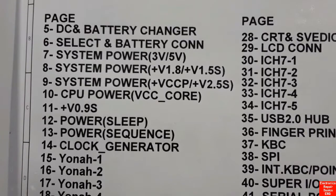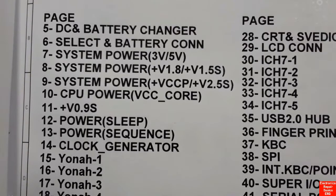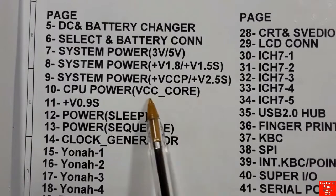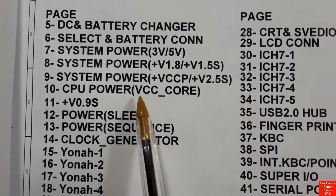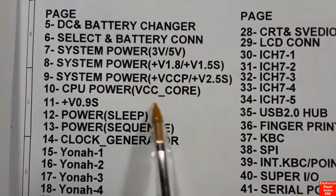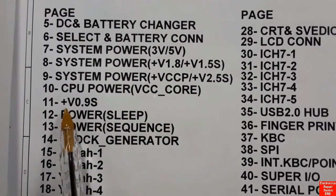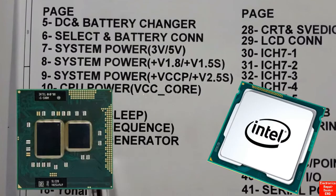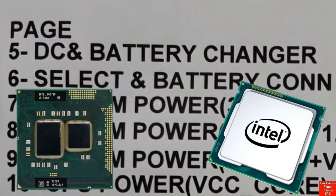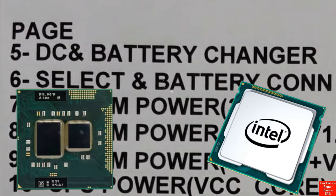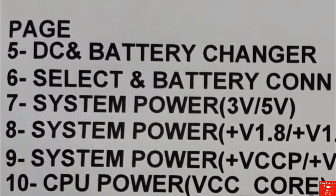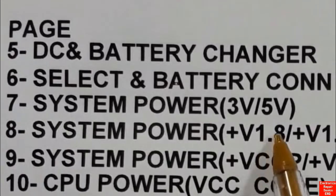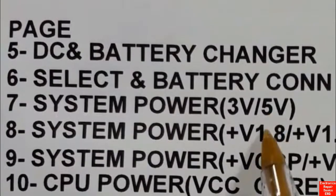In page nine we have the system power plus VCCP and plus 2.5 volt, basically for the CPU or processor, GMCH, and RCH. Here in page ten we have the CPU power VCCR — basically this is the working voltage for the CPU or central processing unit.